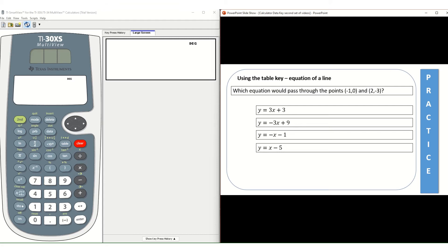So let's go ahead and take a look at how the table key can help us with this problem. What I need to do is I need to make sure that my answer choices are in the y equal setup. If your answer choices are not in the y equal setup, see if you can rewrite it, meaning get y by itself, and then you can use the table key on the calculator to help you out.